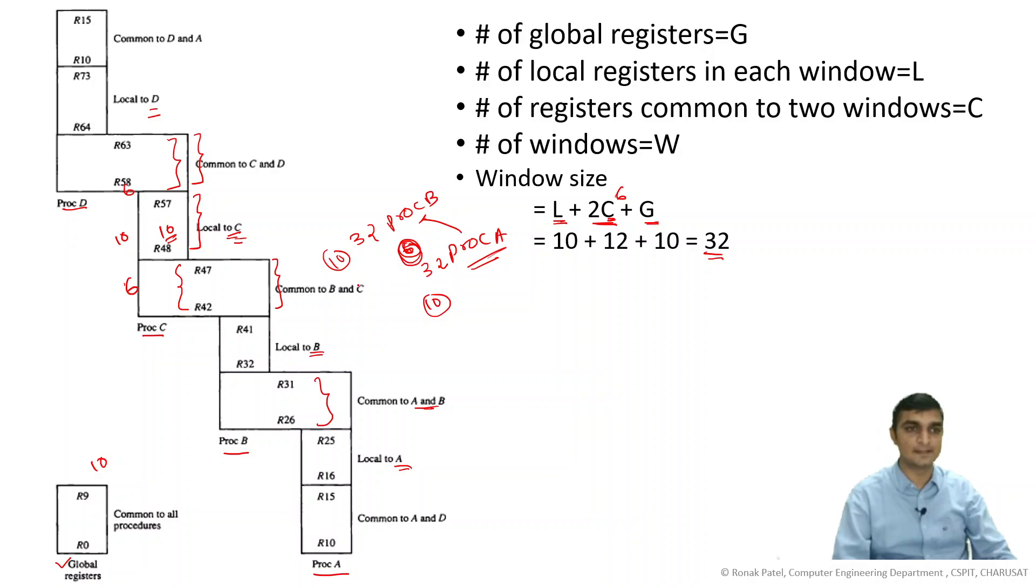And at a time, any one window is active. You can see this is overlapped. So registers needed in the processor - that is L plus C times W plus your global register.